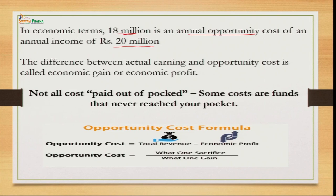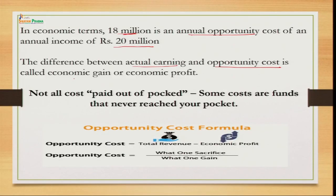In economics we are not only concerned with accounting profit — we are concerned with economic profit. Accounting profit is the profit from what we are doing. Economic profit is calculated when we deduct opportunity cost from actual earnings. If actual earnings exceed the opportunity cost, you are in economic gain; if actual earnings are less, you are in economic loss.